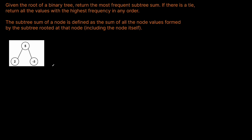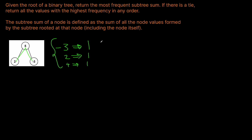Let's think about all the possible subtree sums. At the node negative three, it doesn't have any children, so the subtree sum is negative three. We'll put this into a dictionary where the key is the sum and the value is how many times we've seen that sum. The same thing happens with two — no children, so the sum is two. For the node five, the sum is two plus five plus negative three, which equals four. So each of these has a count of one.